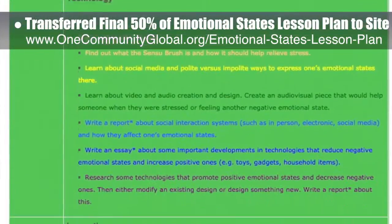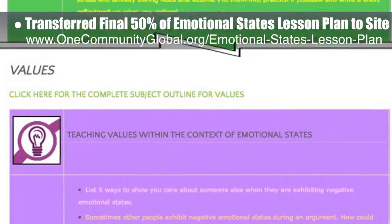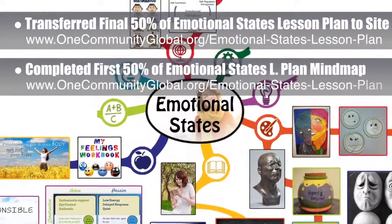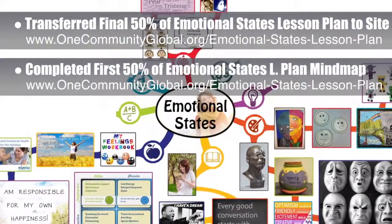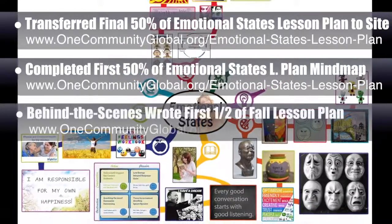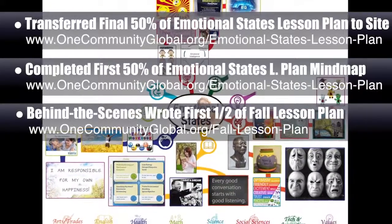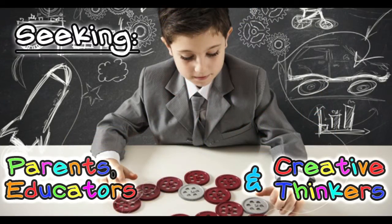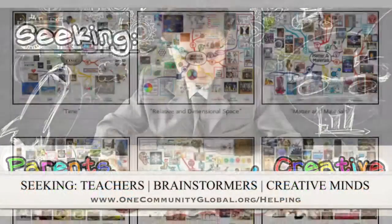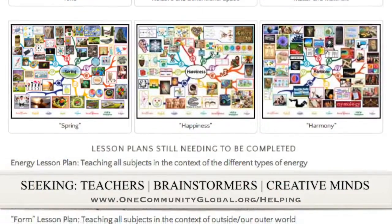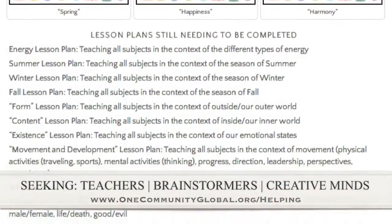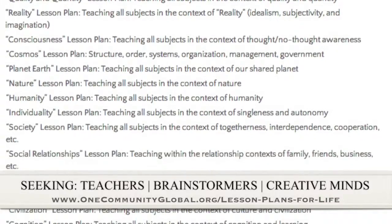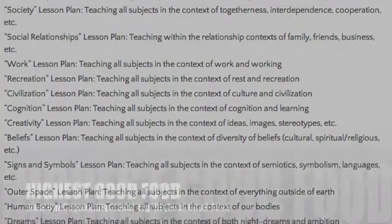This lesson plan is purposed to teach all subjects to all learning levels in any learning environment using the central theme of emotional states. We also completed and added the first 50% of the mind map for the emotional states lesson plan to the web page. Behind the scenes we wrote the first half of the fall lesson plan, bringing that to 100% complete. If you'd like to help, we are seeking people to finish these lesson plans through our open source and free shared education program for all ages.